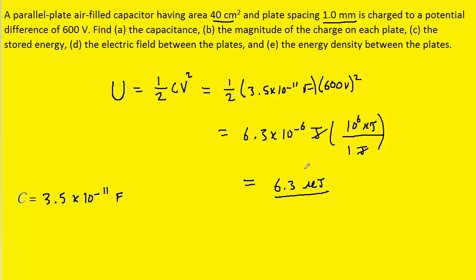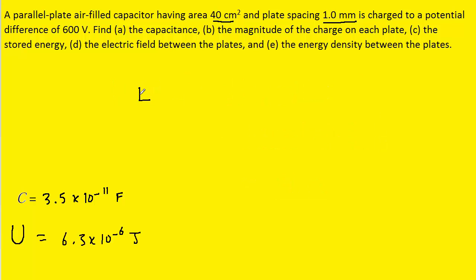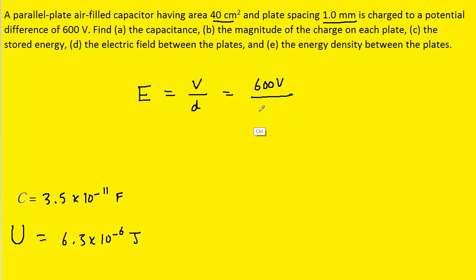The answer to part C can be expressed in microjoules or joules. For part D, the electric field between the plates of a capacitor is simply the potential difference divided by the plate separation. All we have to do is take 600 volts and divide by the plate separation — don't forget to use meters, which is 1 times 10 to the minus 3 meters, or 0.001 meters. When you compute that, you get 6 times 10 to the fifth volts per meter. So this is the correct answer to part D.